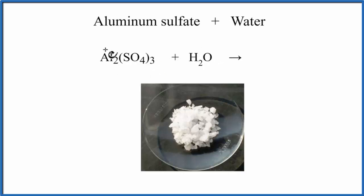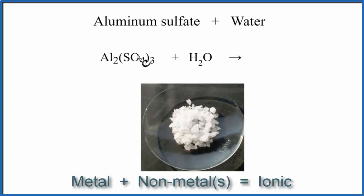If we look at the aluminum sulfate here, we have metal and then we have some non-metals. That would mean this is an ionic compound, and ionic compounds often are soluble in water. They dissociate into their ions.